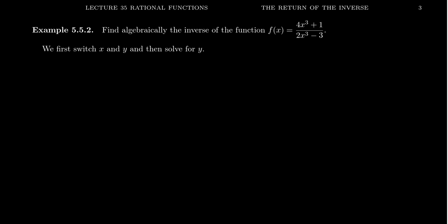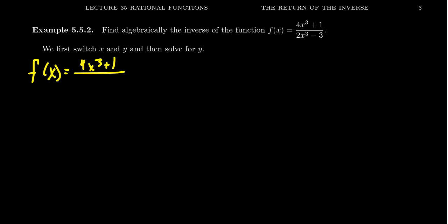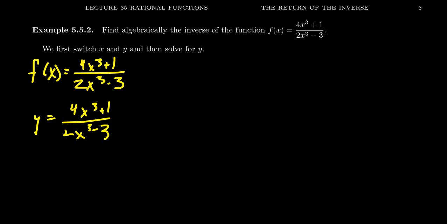Let's look at a slightly more involved example. Take the function f of x equals 4x cubed plus 1 divided by 2x cubed minus 3 — this is a rational function. You can verify using something like Desmos that this rational function is in fact a one-to-one function. We're going to compute its inverse function, which will turn out to involve radicals — specifically the cube root of a rational function. The strategy is exactly the same: start with y equals 4x cubed plus 1 over 2x cubed minus 3, then swap x and y to get x equals 4y cubed plus 1 over 2y cubed minus 3.